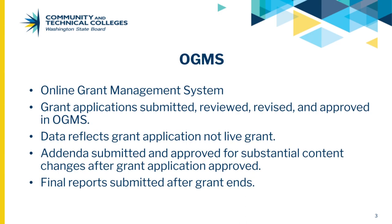OGMS is where a prospective grantee completes and submits a grant application, including a grant budget, to SBCTC. SBCTC staff review the grant application and may request revisions to the content. Once an application has been approved, the application data in OGMS remain static. If you need to propose a significant change to the scope of your grant, you can create and submit an addendum in OGMS. An addendum should be submitted only for scope changes and not for changes that merely impact the grant budget. If a final report is required, the grantee should attach that to the applicable grant application in OGMS after the grant period ends.